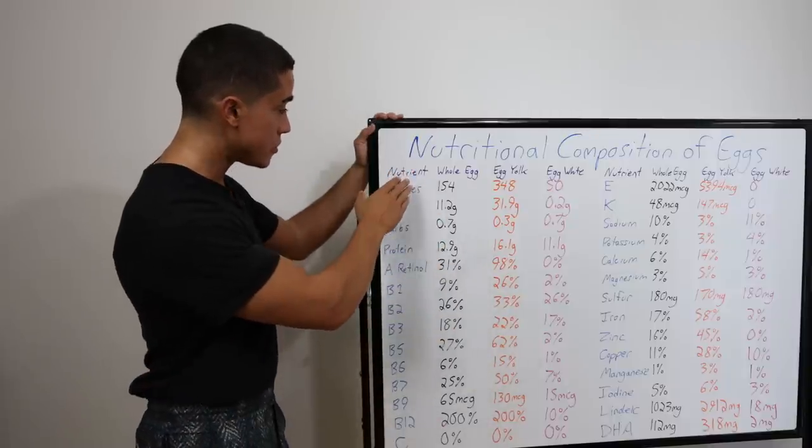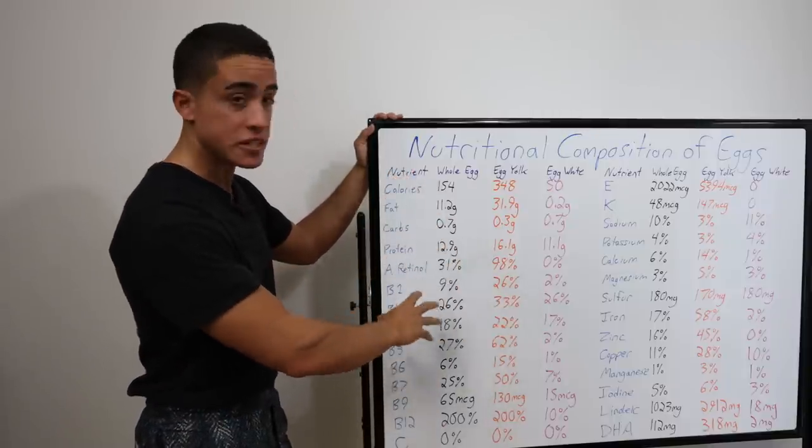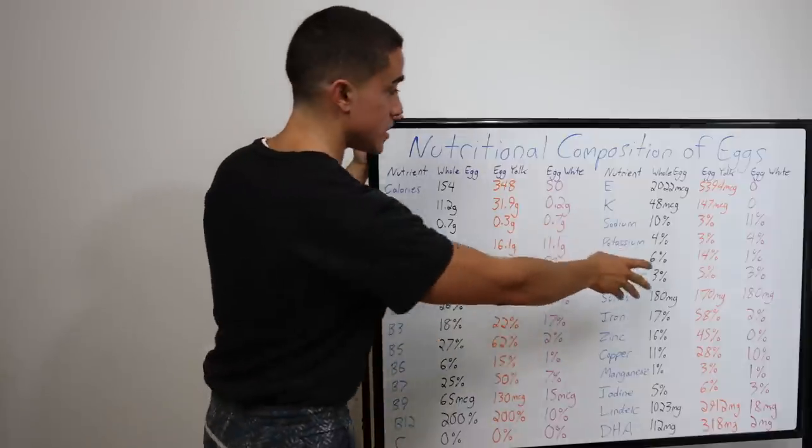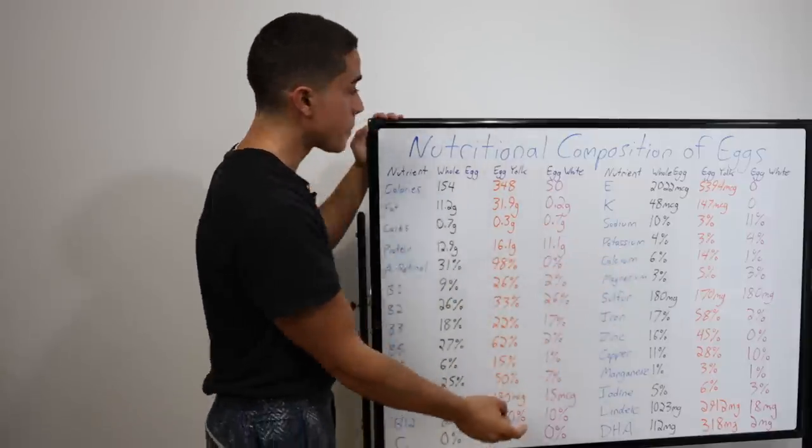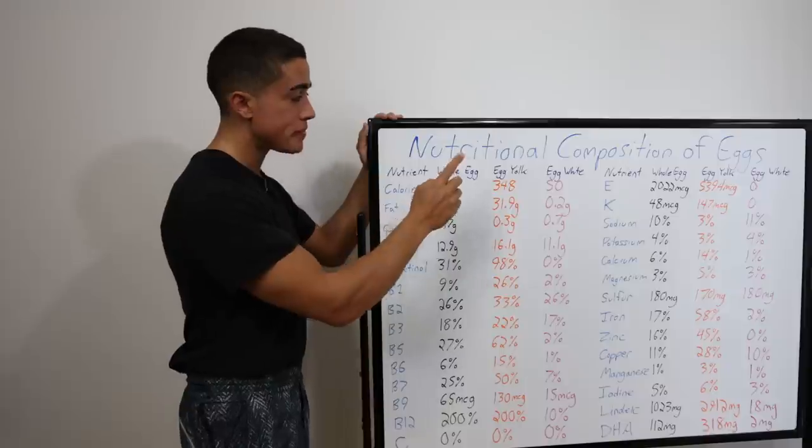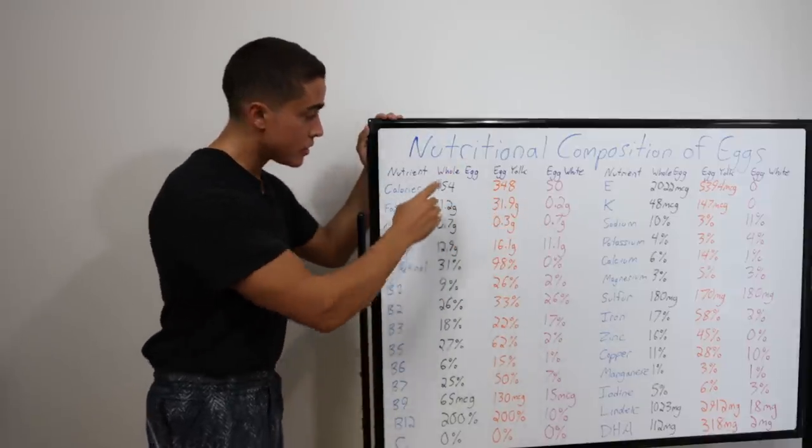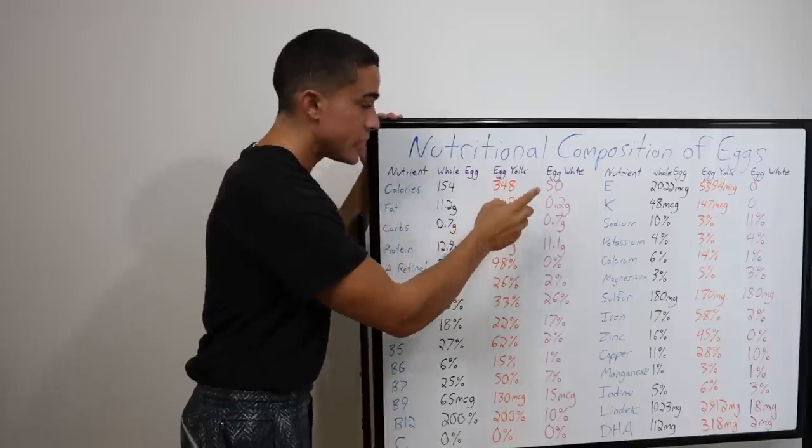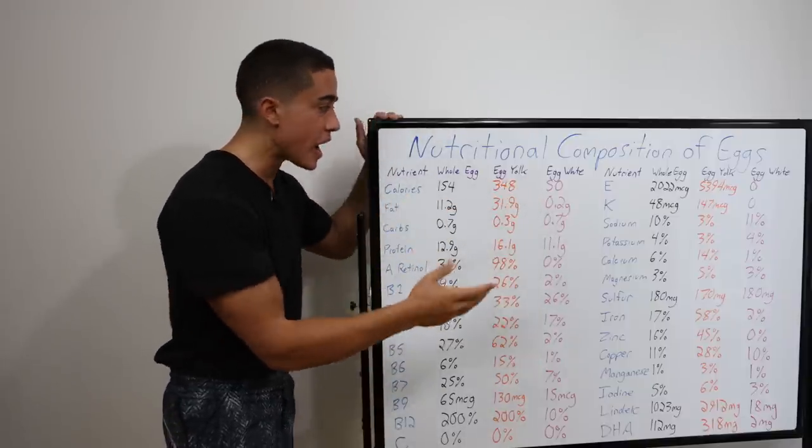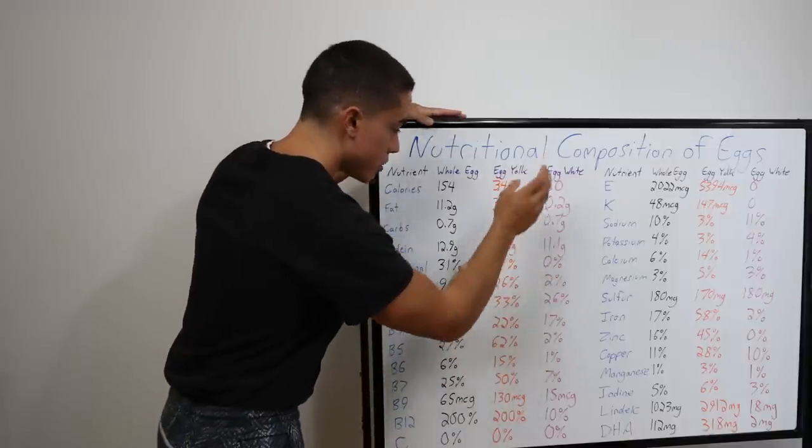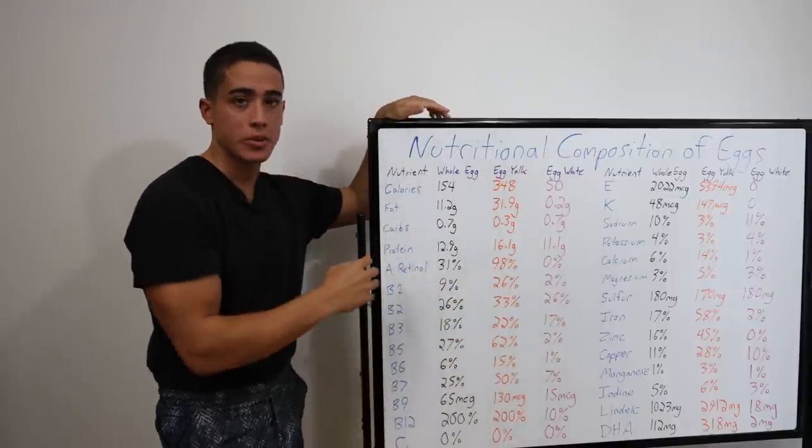We have the nutrient here, 15 on the left side and 15 nutrients on the right side. And I did the whole egg, the egg yolk, and the egg white. Now keep in mind, the calorie count of these is drastically different.